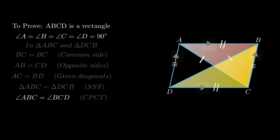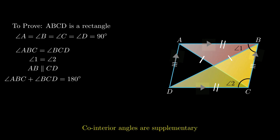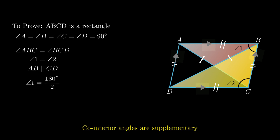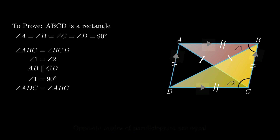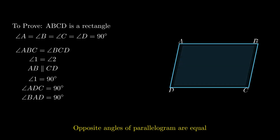By corresponding parts of congruent triangles, angle ABC equals angle BCD, i.e., angle 1 equals angle 2. As side AB is parallel to side CD, the sum of angle ABC and angle BCD equals 180 degrees, since co-interior angles are supplementary. Therefore angle 1 + angle 2 = 180°. Since angle 1 = angle 2, we get 2 × angle 1 = 180°, so angle 1 = 90 degrees.